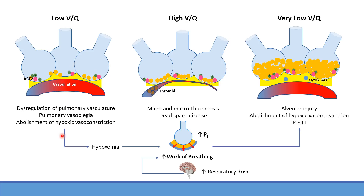As a result of this, the patient will become hypoxemic and will increase the work of breathing in order to get a larger tidal volume. At the same time, those patients have increased respiratory drive because of neurotropism, leading to a further increase in the work of breathing. This will lead to large swings in intrathoracic pressure, leading to increased transpulmonary pressure, which exerts stress and strain on the alveoli — what we call patient self-inflicted lung injury.